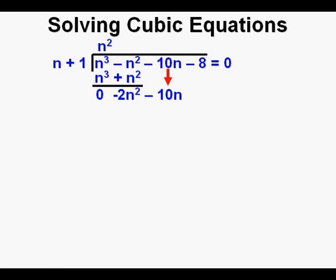We now bring down the -10n from above. Now we divide what we have at the bottom -2n² by n and get -2n, which goes on top. Then we take that -2n and multiply it by n to get -2n² and put it below the -2n² here. Then we take -2n and multiply it by 1 to get -2n and put it beneath the -10n here. We then subtract -2n² from -2n² and get zero. Then we subtract -2n from -10n and get -8n. We need to use our integer math here well or we'll make a mistake.